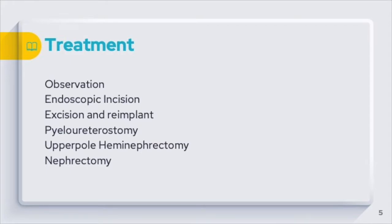When ureterocele causes obstruction and loss of function of one particular moiety, especially the upper pole moiety, then heminephrectomy is needed.